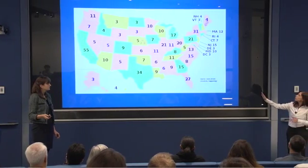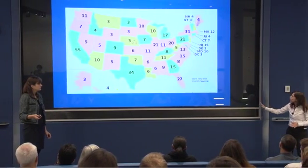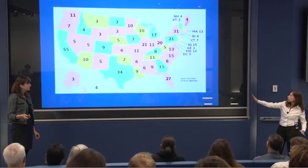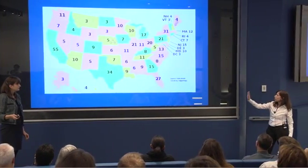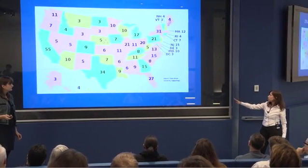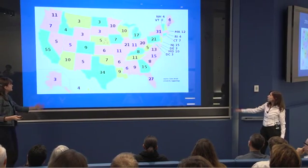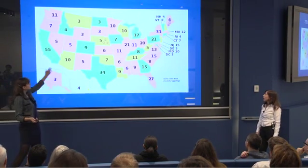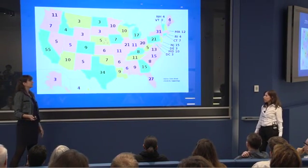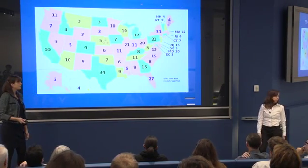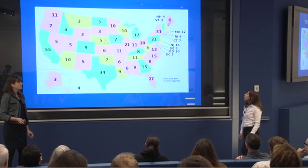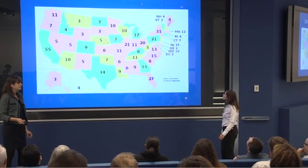So as you can see from the map, some of the larger states like California and Texas, and even us — New York — we have quite a bit of electoral vote power.